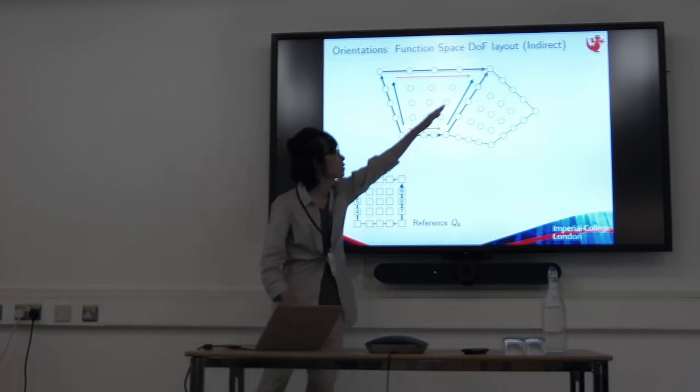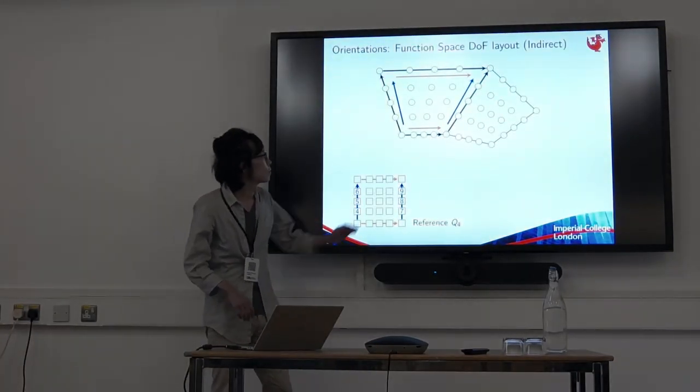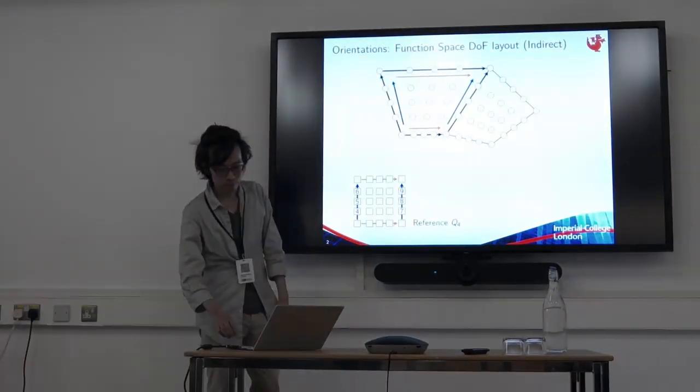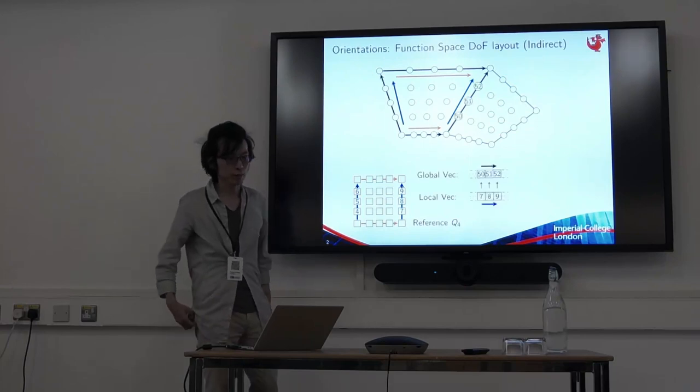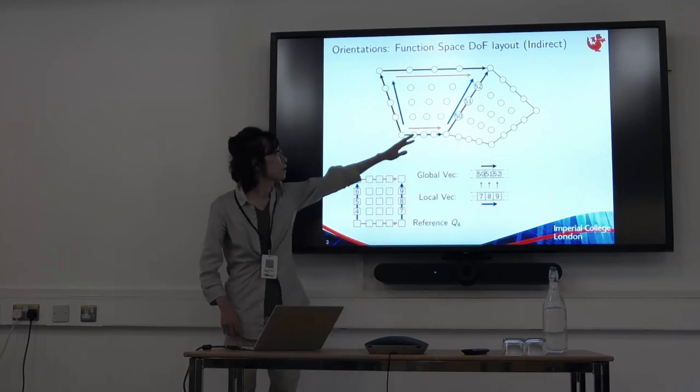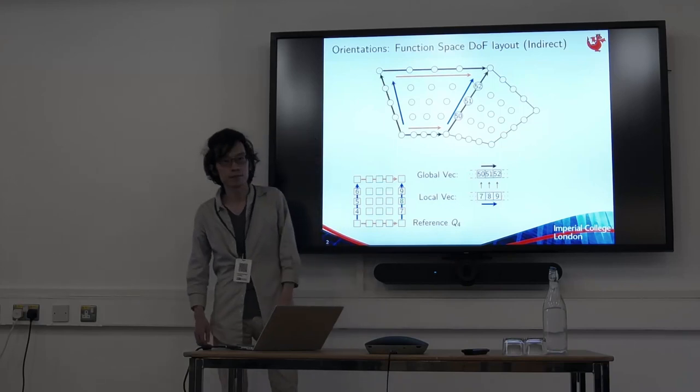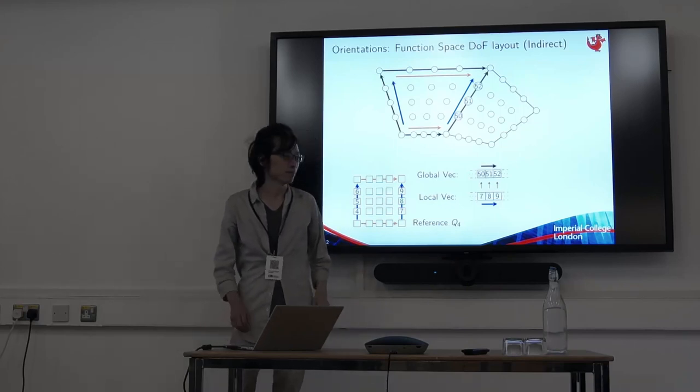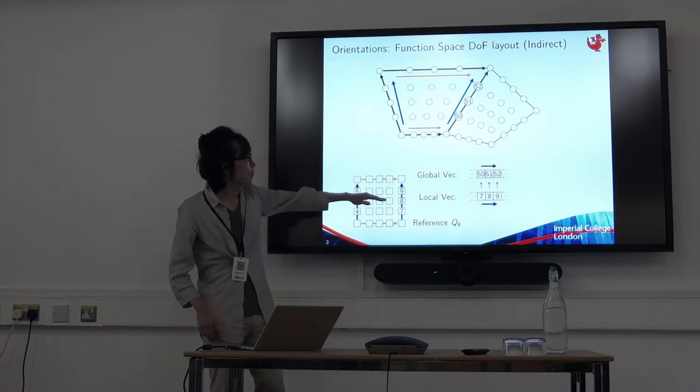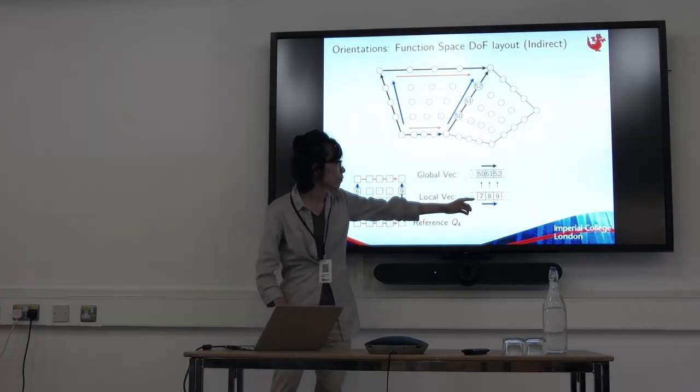This one and this one are conforming, they are pointing to the same direction. And then we order global dots 50, 51, 52 following our rule. And these are actually the indices into the global vector which stores the dot values of some function.